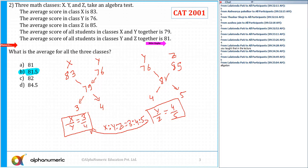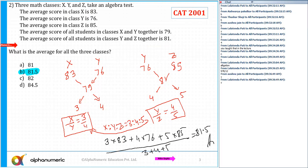So what is the average for all the three classes? For all the three classes, I can say the answer is the average: 3 into 83 plus 4 into 76 plus 5 into 85, upon 3 plus 4 plus 5. Is that clear to all of you? You could have solved without the allegation rule also.